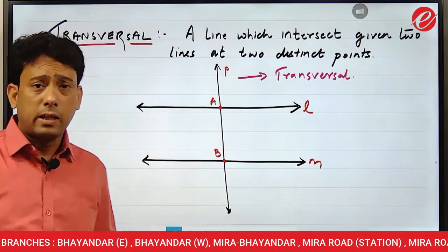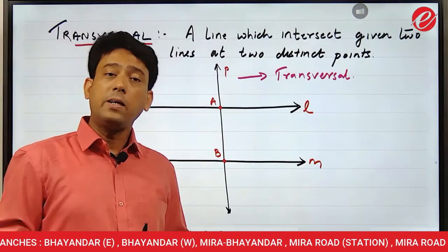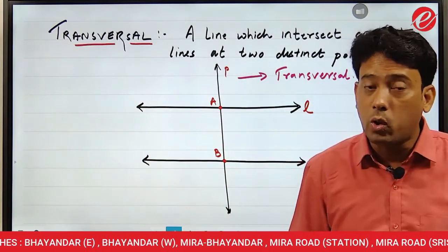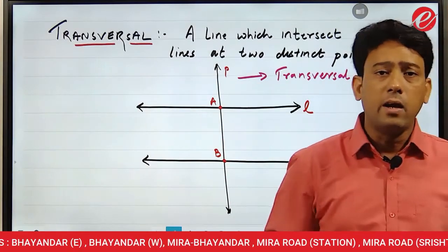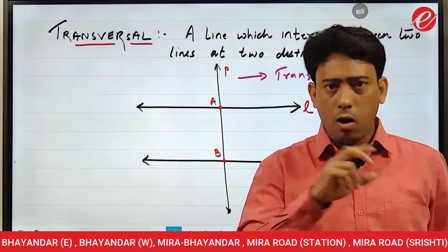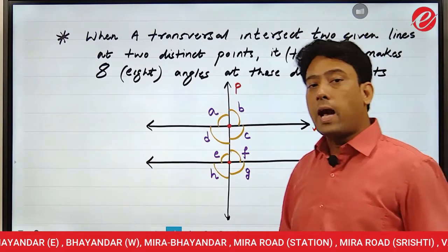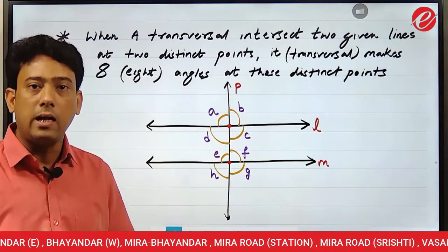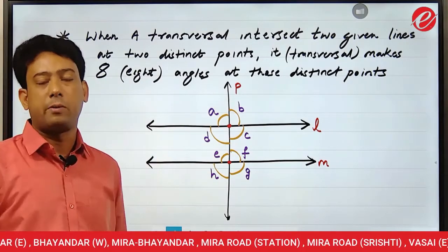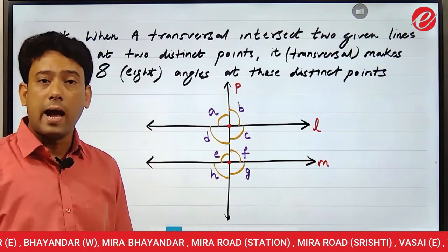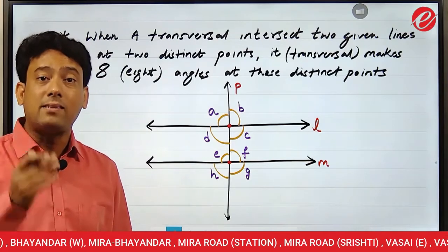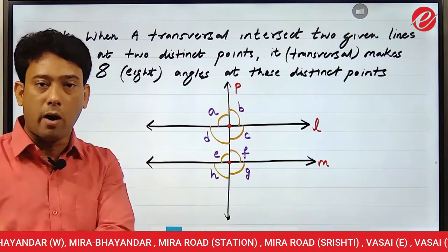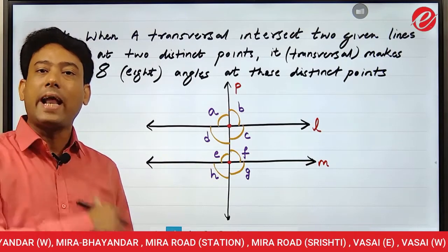So we saw that a transversal intersects at two distinct points. At those two distinct points, the transversal forms angles. The next topic we are going to study is about those angles. When a transversal intersects two given lines at two distinct points, it forms a total of eight angles. That transversal makes eight angles at those two distinct points — look carefully at this diagram.